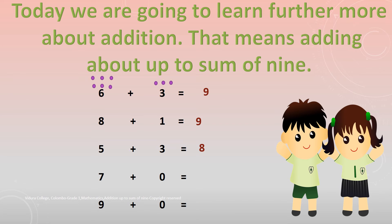Let's move to next one. 7 plus 0. How do we get the answer? Draw 7 dots above number 7. 0 means no value. So we are not drawing any dots to this number. Now tell me what is the answer? Yes. The answer is 7. 7 plus 0 is equal to 7.